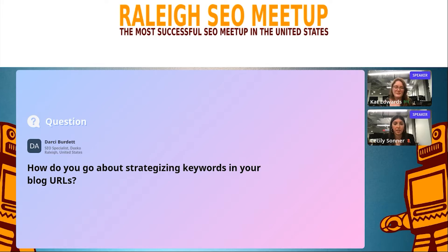One more note on that: if it's an existing blog, you don't really need to optimize the URL again because that's sort of a lower SEO ranking factor. But if you are creating a brand new blog, we would try to get some keywords in the URL.